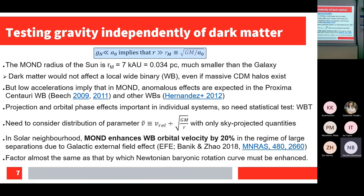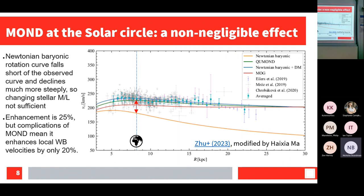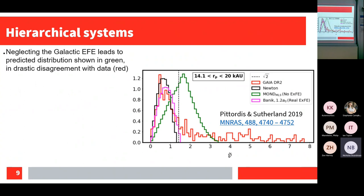The factor you get is the same as the factor by which the Newtonian rotation curve of the Milky Way must be enhanced in MOND. The orange rotation curve is what the galaxy would do if Newtonian physics worked; the data are higher, with a ~25% enhancement. Due to the complications of MOND, the enhancement to local wide binaries is slightly less, but in general the enhancement factor seen in the galaxy should show up in wide binaries.